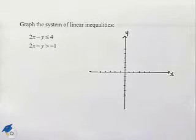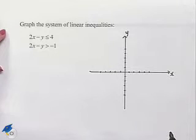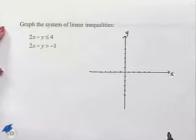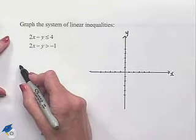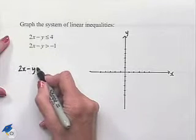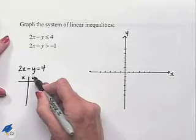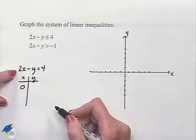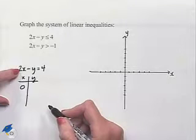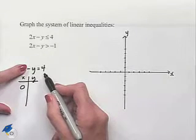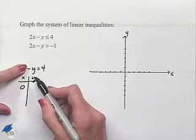In our next problem we're going to graph a system of linear inequalities. The first equation is 2x minus y is less than or equal to 4, and the second equation is 2x minus y is greater than negative 1. We'll begin by looking at the equation 2x minus y equals 4, and graph this using the intercept method. Let's let x equal 0 and solve for y: 2 times 0 minus y equals 4, so negative y equals 4.